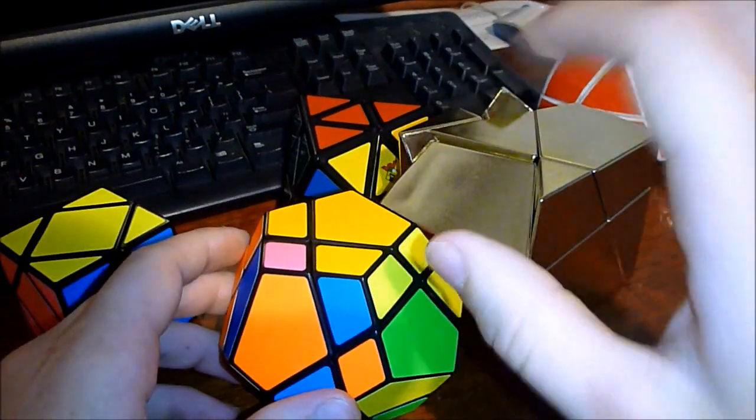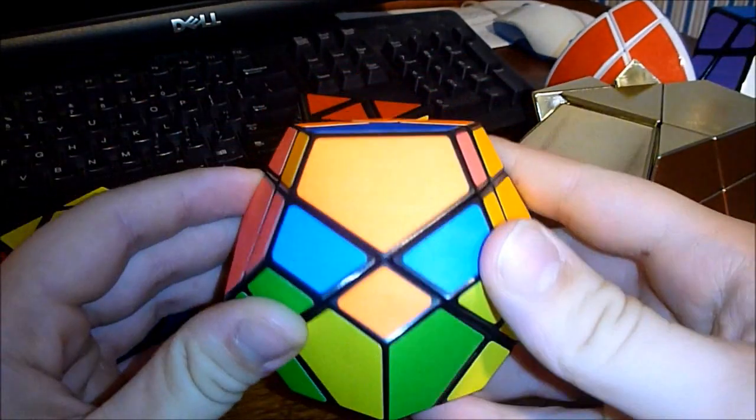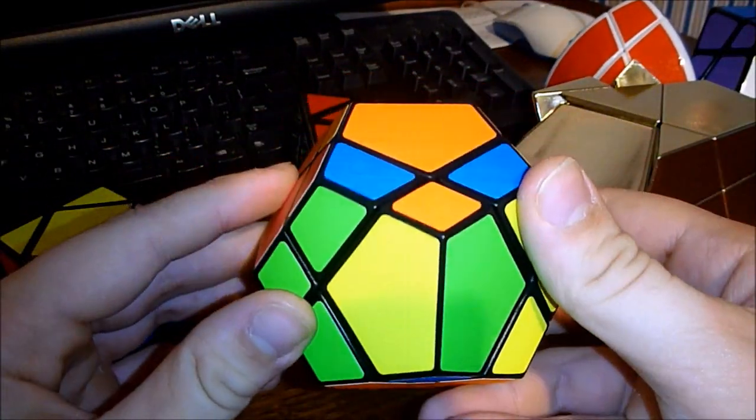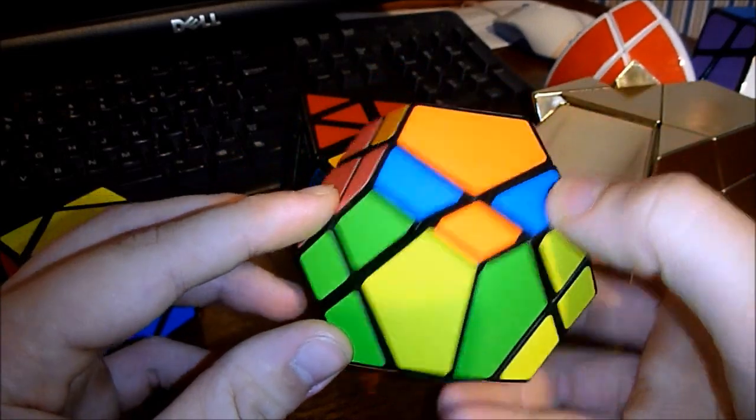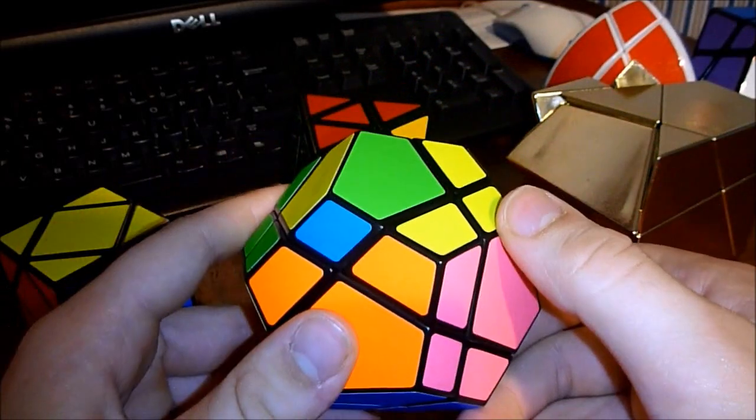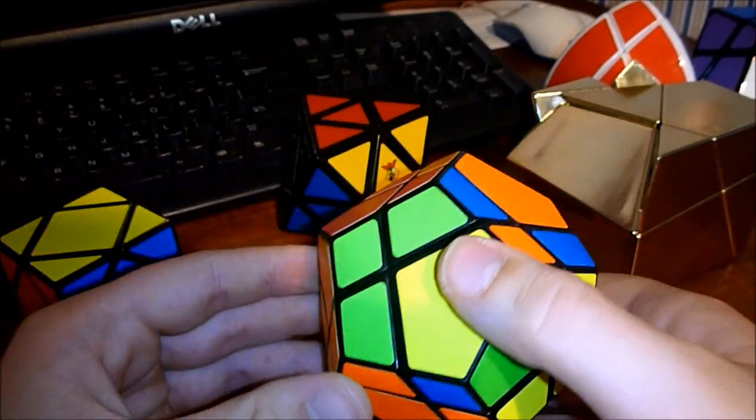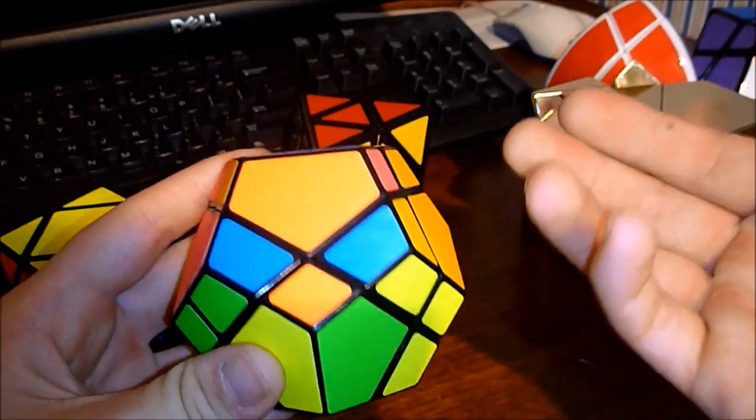I'll first show you what it looks like on the skew ultimate, and then I'll show you on the golden cube. But this is a parity. Now a parity happens when you have only two centers that are unsolved, and they're both in their correct position. Or something else could happen because your puzzle was taken apart and put back together the wrong way. But this is what it generally looks like.